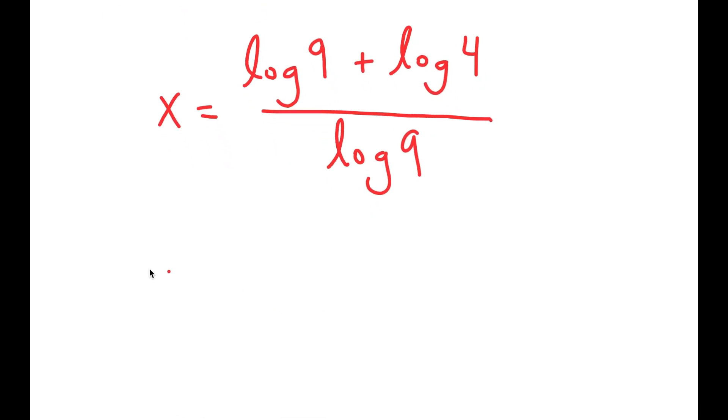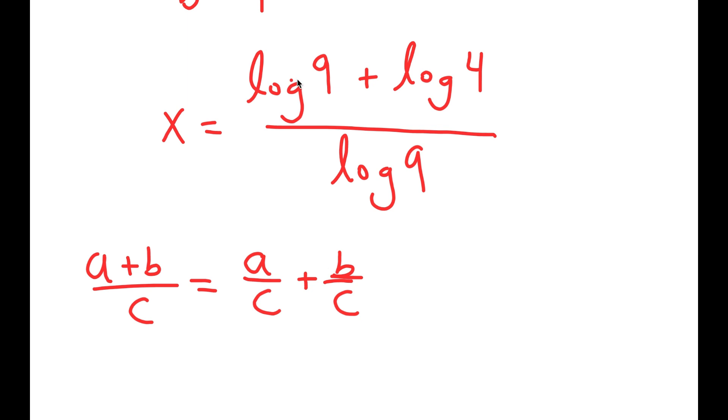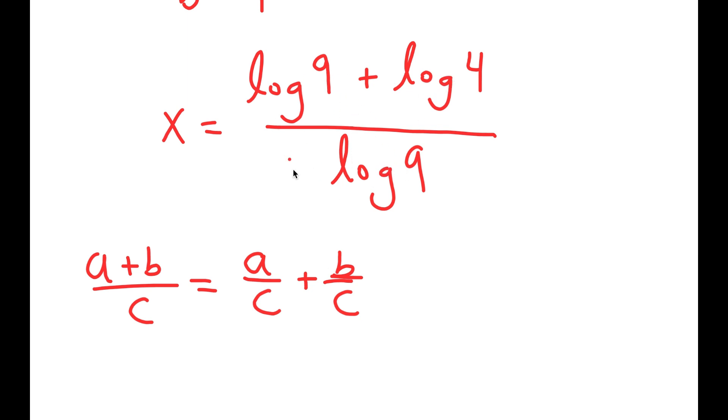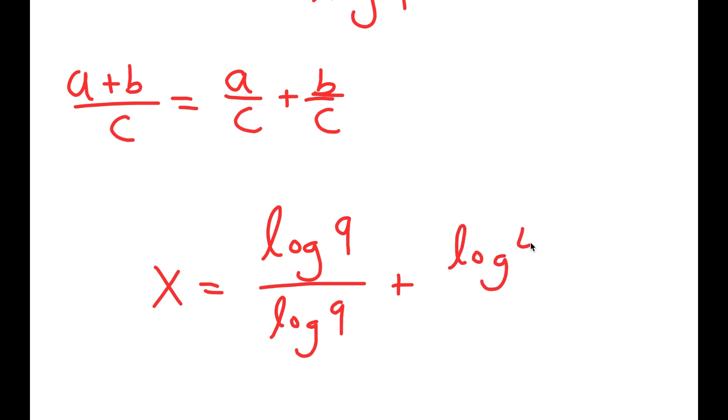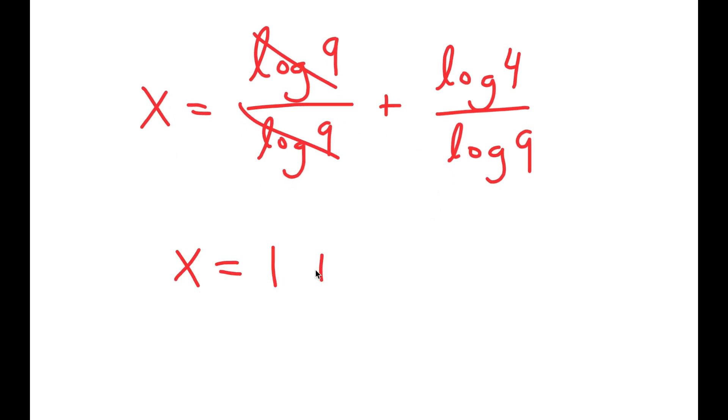Now, if I have something in the form a plus b over c, this is equal to a over c plus b over c, and this is just using fraction properties. So I have log 9 plus log 4 over log 9. And I'm going to rewrite this as log 9 over log 9 plus log 4 over log 9. Now, anything over itself equals 1, so log 9 and log 9 cancel out, and I get 1 plus log 4 over log 9.